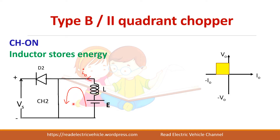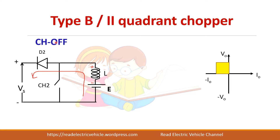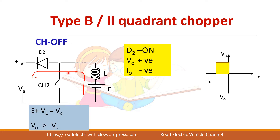When the switch is on, the inductor stores energy and current flows out of the load, so output voltage is zero and I-naught is negative — giving second quadrant operation. When the switch is off, the stored energy in the inductor and the battery drive current to the source through diode D2. Voltage is positive and I-naught is negative because current flows out of the load. E plus VL adds up so V-naught is greater than supply voltage — this is essentially a step-up chopper.